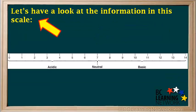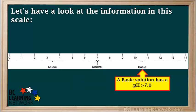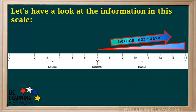Here's the scale. Let's have a look at the information in this scale. First of all, it tells us that a neutral solution has a pH of 7. It also tells us that a basic solution has a pH greater than 7. We see that the higher the pH is above 7, the more basic a solution is. For example, pH 8 is slightly basic, while pH 14 is very basic.